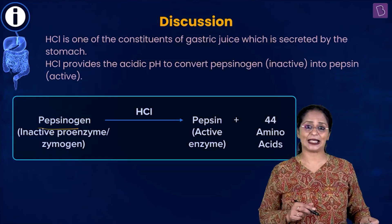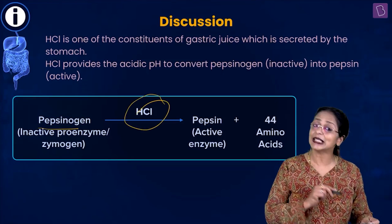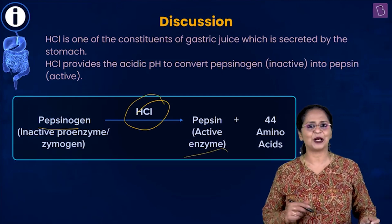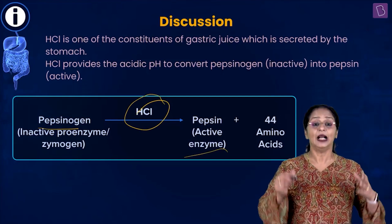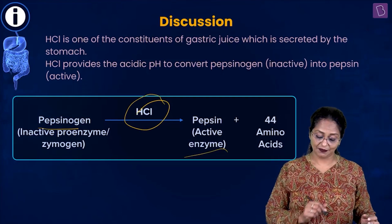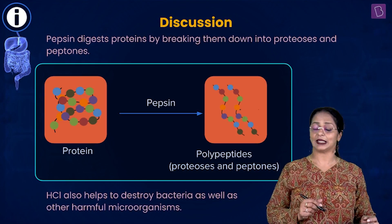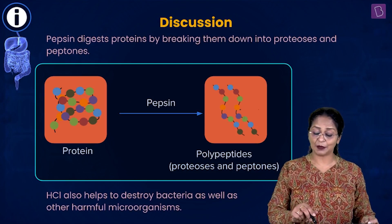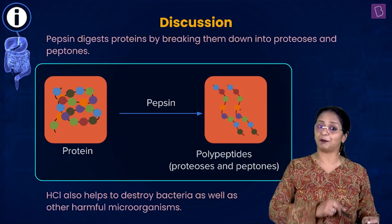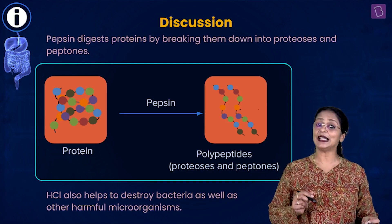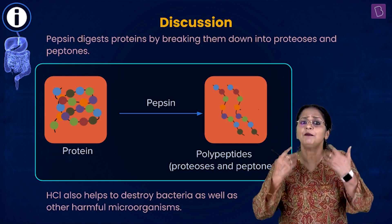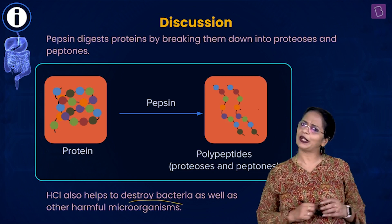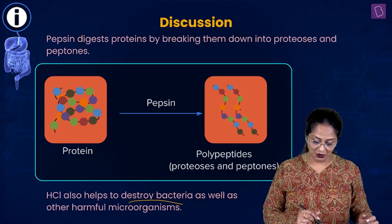Pepsin is found in an inactive form called a zymogen, also known as pepsinogen. It becomes active only in the presence of HCl — 44 amino acids are released and pepsin becomes active. Only when pepsin is active does protein digestion begin. Pepsin digests proteins by breaking them down into proteoses and peptones.